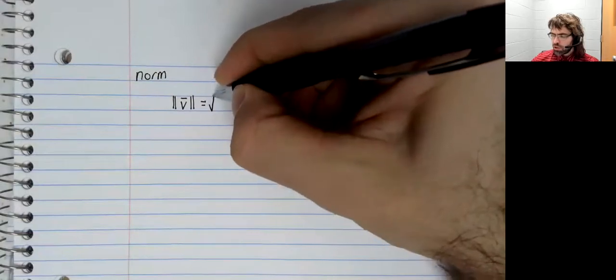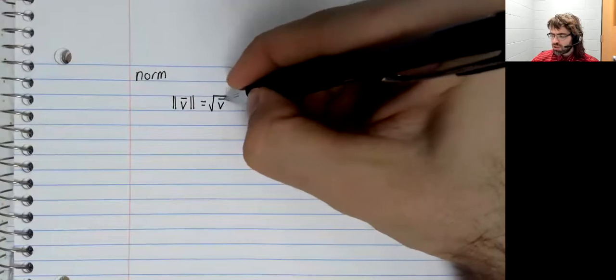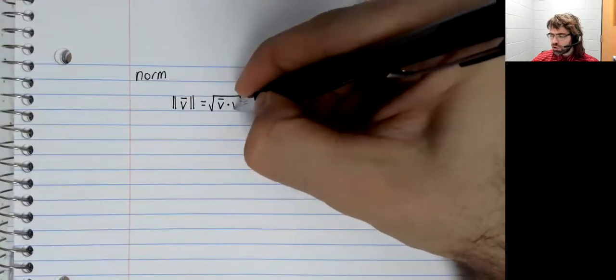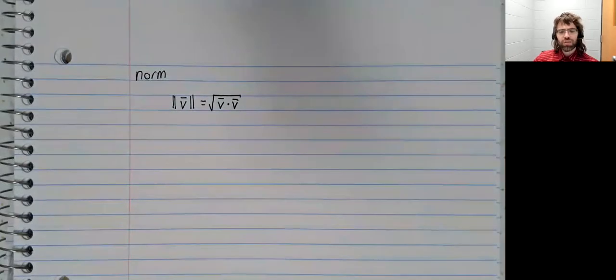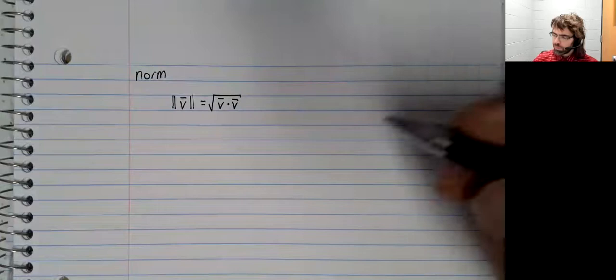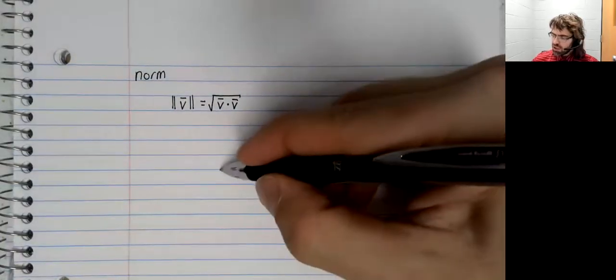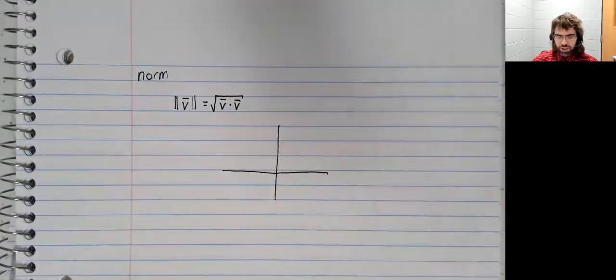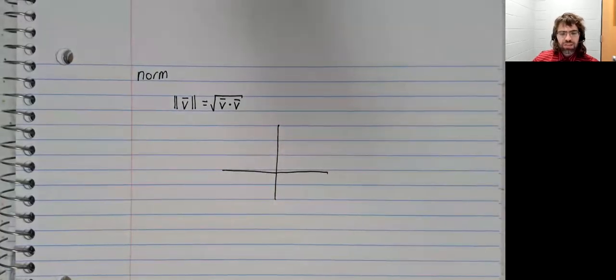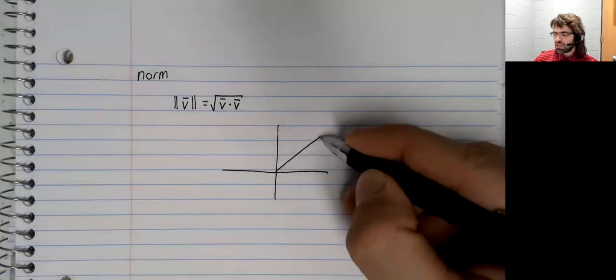And the norm of a vector is the square root of the dot product of the vector with itself. That might seem like kind of an odd definition, but it has an extremely concrete meaning.